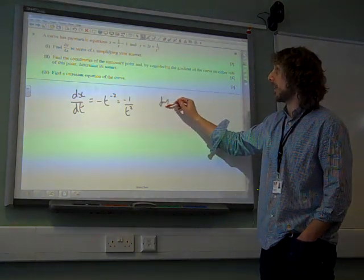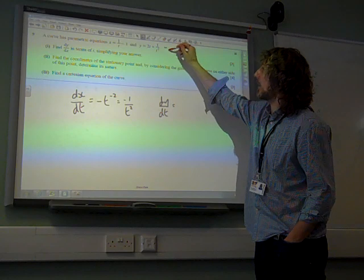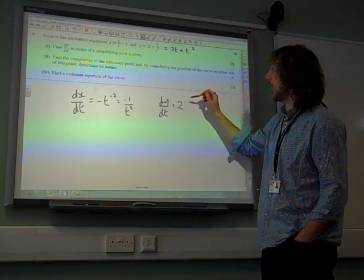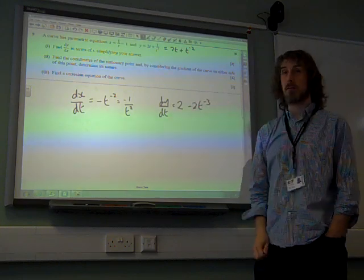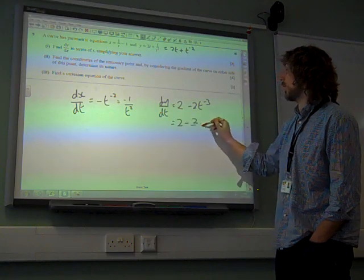Dy by dt. Well, notice that is 2t plus t to the minus 2. So that's 2 minus 2t to the minus 3, so we've got 2 minus 2 over t cubed.